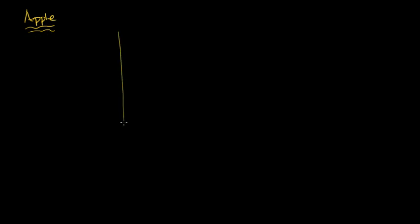Let's say we are in the apple market. What I want to do in this video is think about both demand and supply for apples at different prices. So let's draw ourselves a little graph here. The vertical axis is the price axis, and the horizontal axis is the quantity of apples.